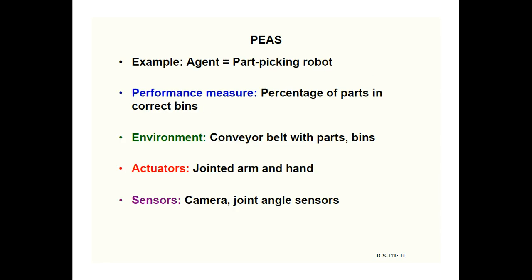Next example: the part-picking robot, which works in an industrial environment where goods are transported. The environment of the part-picking robot is a conveyor belt with parts and bins.